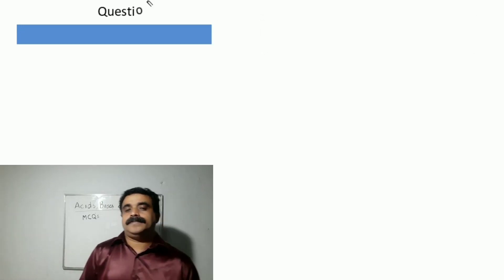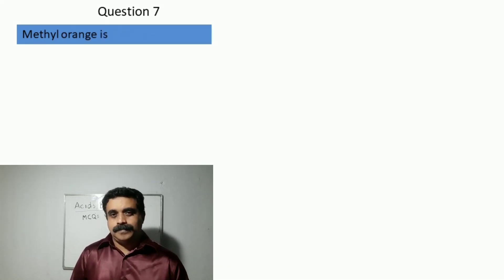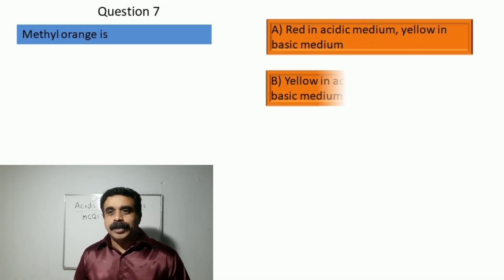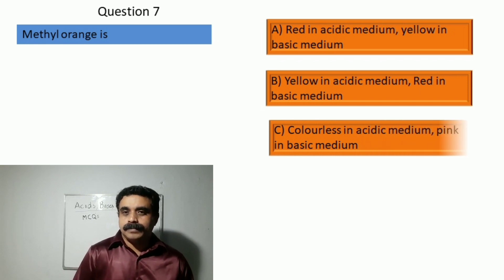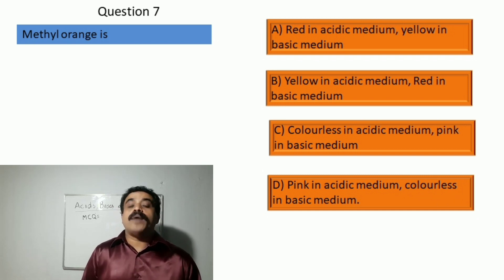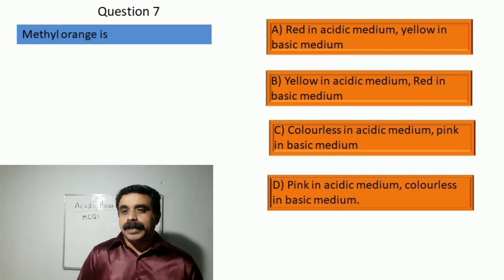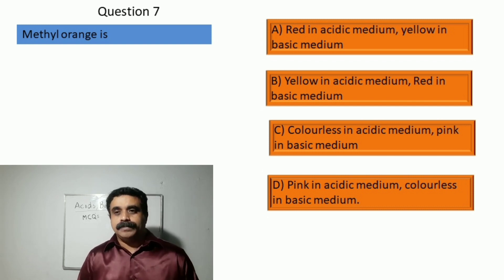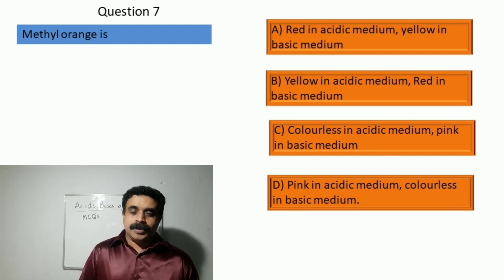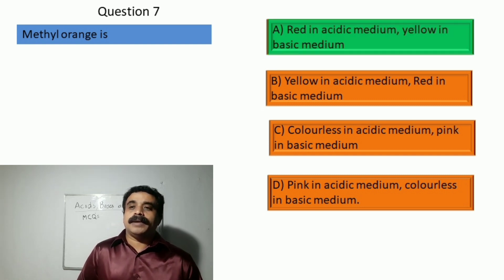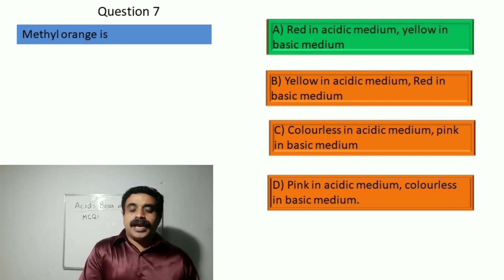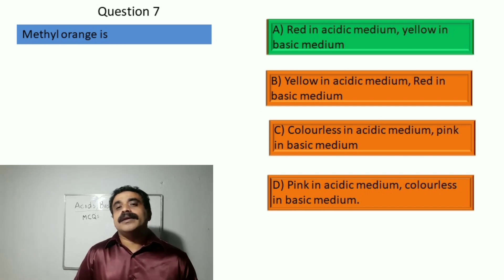Question number seven: methyl orange is — option A: red in acidic medium and yellow in basic medium, option B: yellow in acidic medium and red in basic medium, option C: colorless in acidic medium and pink in basic medium, option D: pink in acidic medium and colorless in basic medium. The correct answer is option A: methyl orange is red in acidic medium and yellow in basic medium.